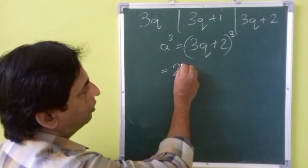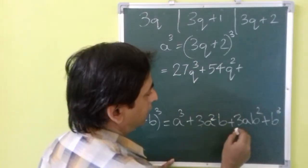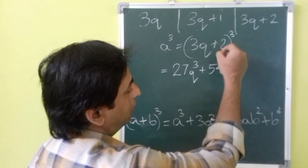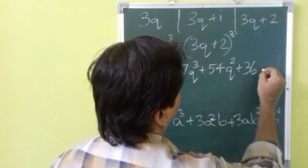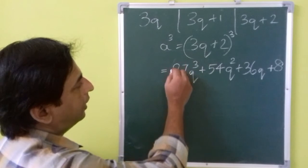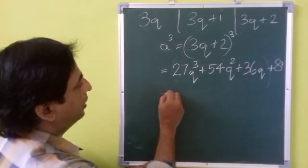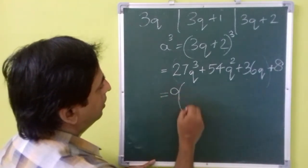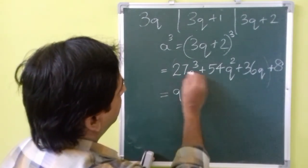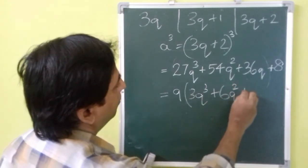So 3q cube, that is 3q to the power 3, will be 27q cube, plus 3a square b, that is 3 times 3q square times 2, that is 18q square, plus 3ab square, that is 3 times 3q times 2 square, that's 4, that is 36q, plus 2 cube is 8.